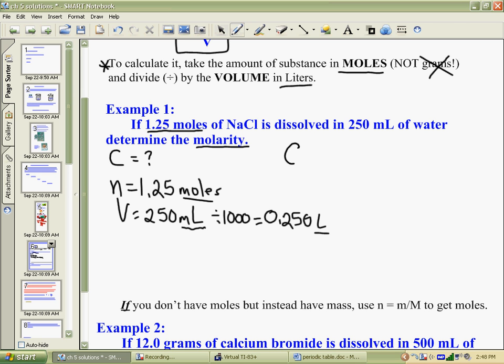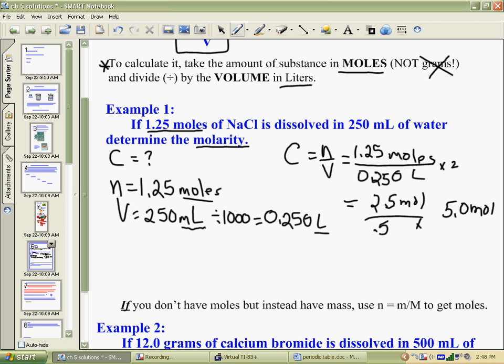Concentration, n over V, you have 1.25 moles divide by 0.250 liters. Rather than bring up a calculator, we know if we were to double this, you would get 2.5 moles per 0.5 liters. And doubling it again would give you 5 moles per 1 liter, and that's your answer. Might as well leave the calculators on the desk if you can.